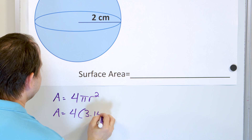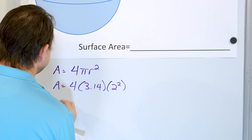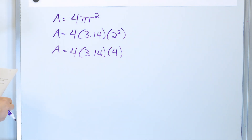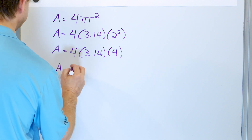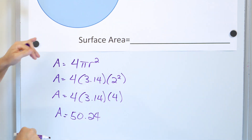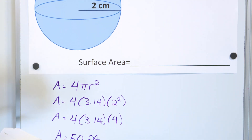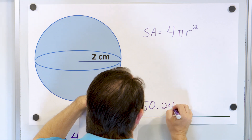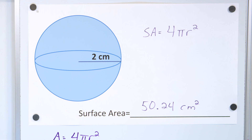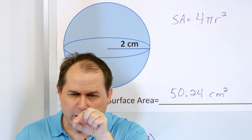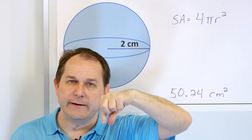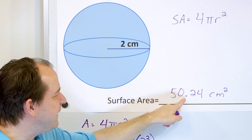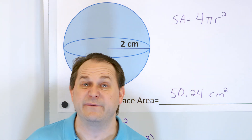So it's four times 3.14 — that's rounded — and the radius is two, so it's two squared. That means it's four times 3.14, and then two squared is four. If you just multiply these three numbers together — four times 3.14 times four — the area you get is 50.24. The units we're working with are centimeters, and since this is area, it's square centimeters. So 50.24 square centimeters. This means that if you covered the sphere with little squares, each one centimeter on a side, you'd have just a little bit more than 50 of them — about 50 and a quarter square centimeters on the surface.